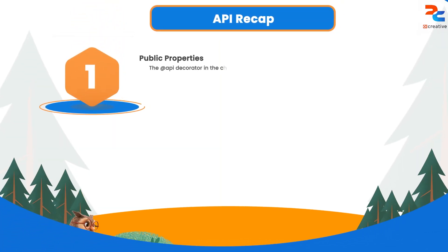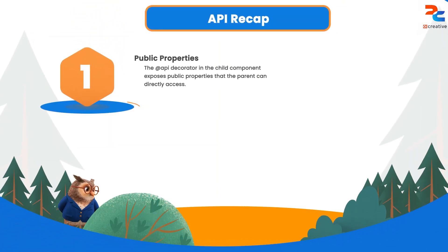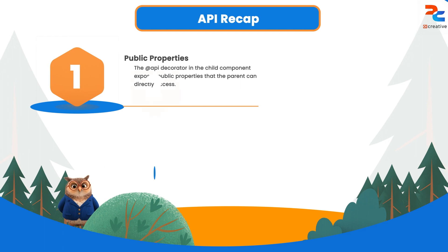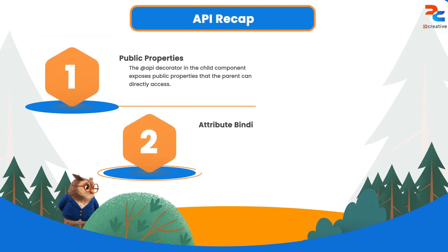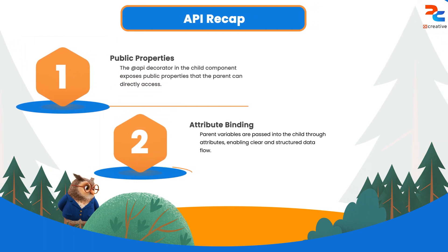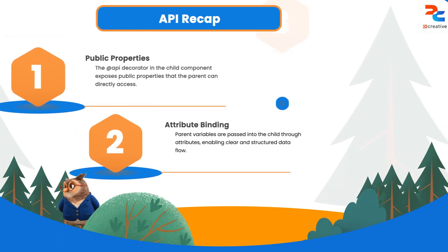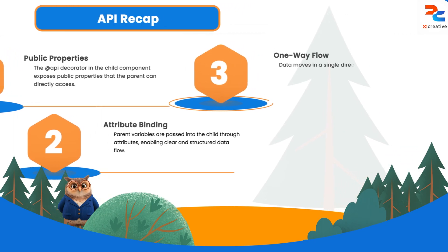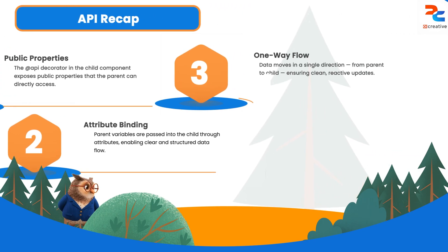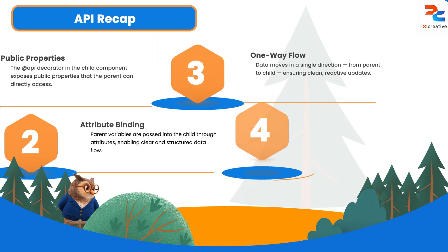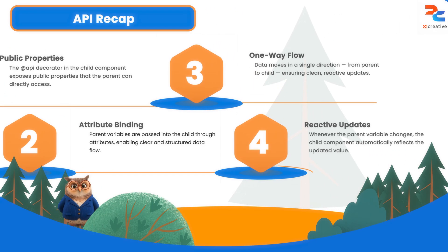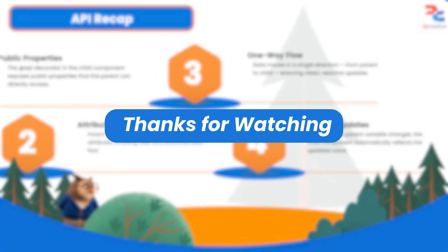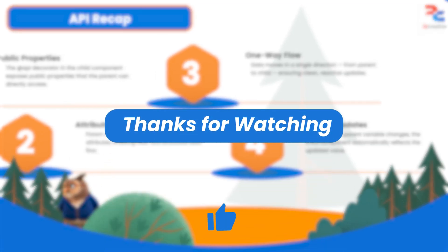When the parent's variable changes, the child re-renders instantly with no manual update needed. Let's recap what we've done: we used the API decorator in the child to expose public properties and bound parent variables directly in HTML attributes. Data flows one way from parent to child, reactively. In the next video, we will see how a child can communicate with its parent using custom events.